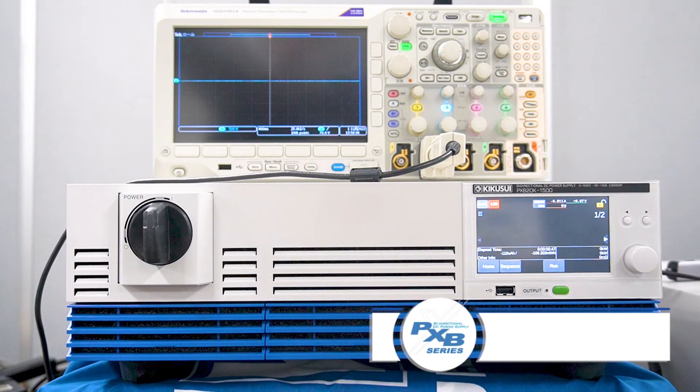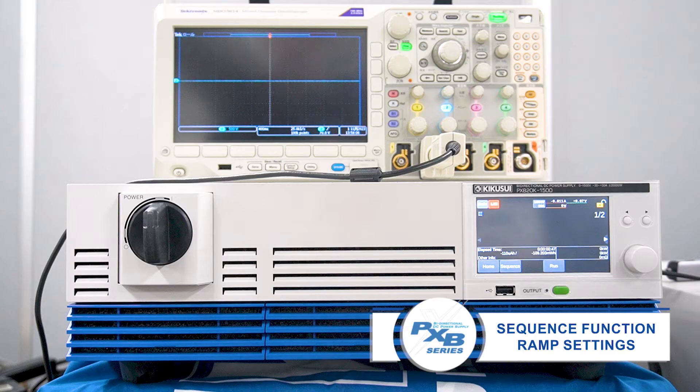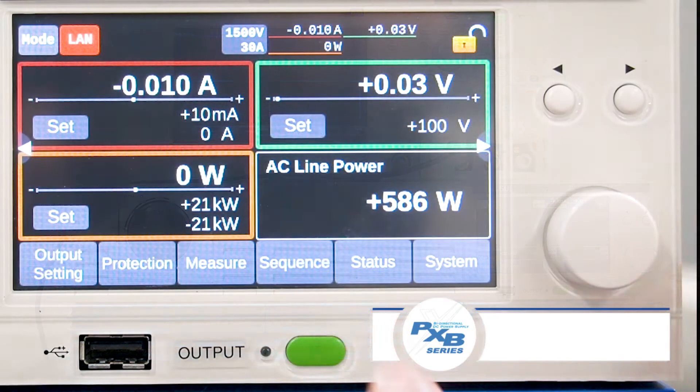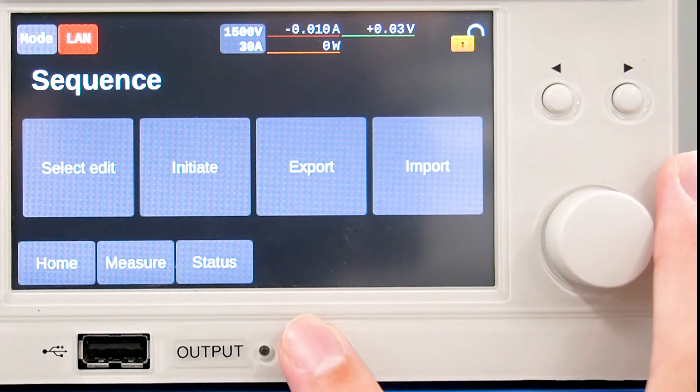Now, let's take a look at the sequence function ramp settings. Same as before, we will start by creating a program. On the home screen, press sequence, then select edit.